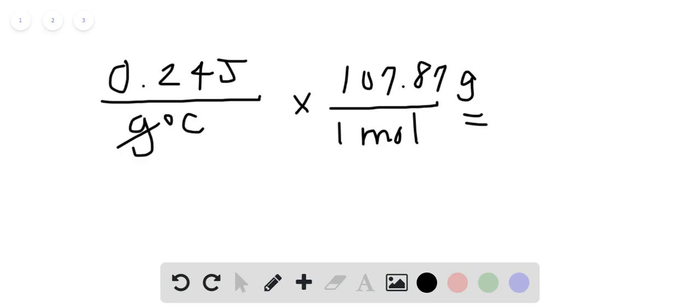So essentially, grams cancel, and we're left with joules per mole degree Celsius, and I get 26 joules per mole degree Celsius. That's our molar heat capacity.